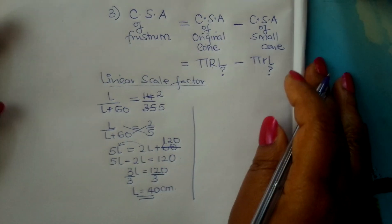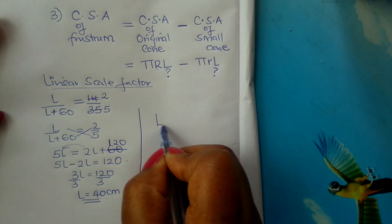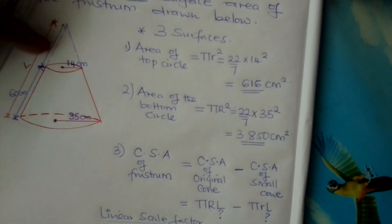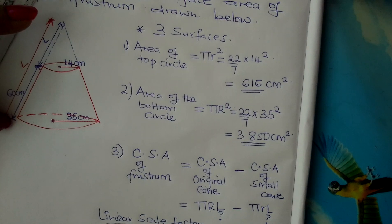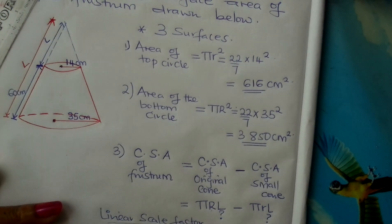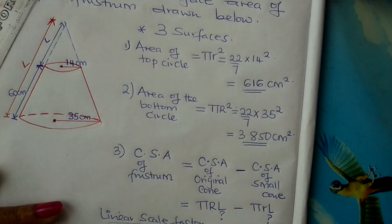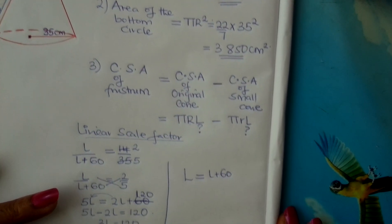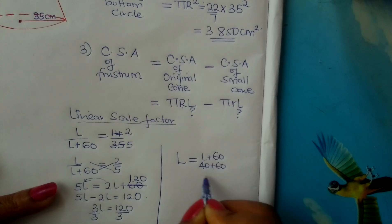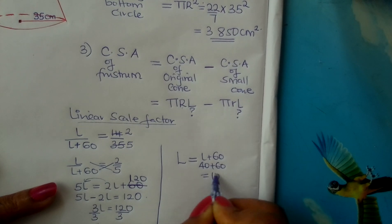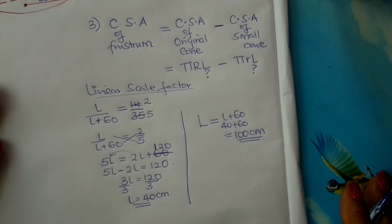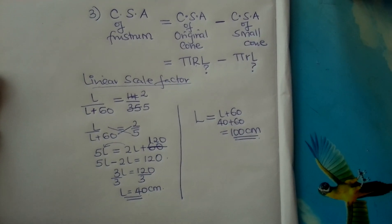If small l is 40 centimeters, then capital L equals small l plus 60, which is 40 plus 60, giving us 100 centimeters.